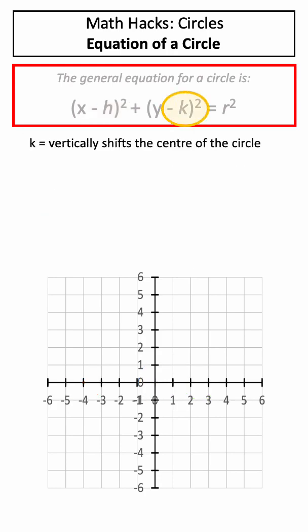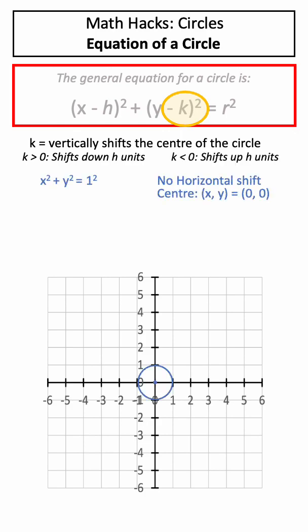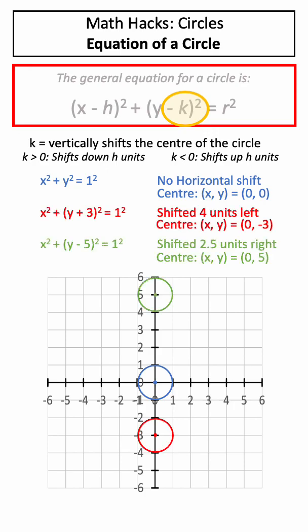k on the other hand vertically shifts the center of our circle. If k is positive, the circle is shifted down k units, and if k is negative, the circle is shifted up k units. Once again, our untransformed circle has a center of (0, 0), but we can shift it vertically by adjusting the value of k.